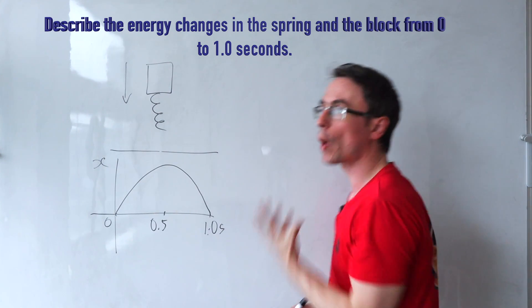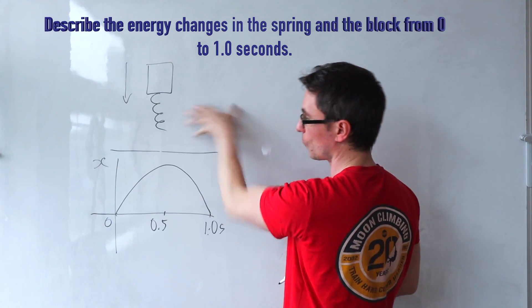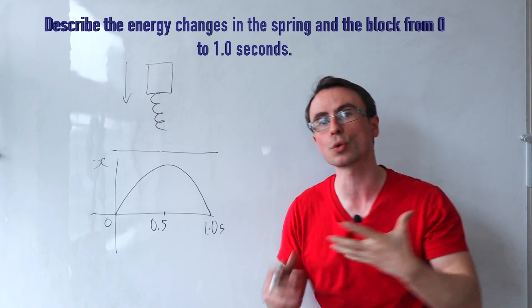If the spring touches the ground at t equals zero, describe what would happen to the energy of the block in the spring between t equals zero and t equals one second.